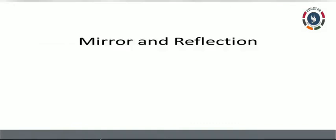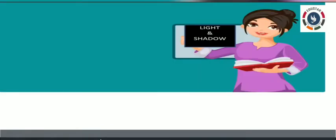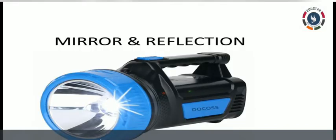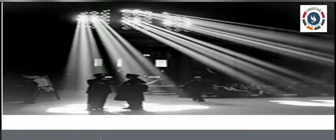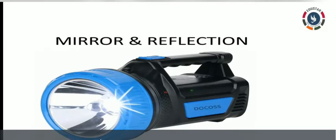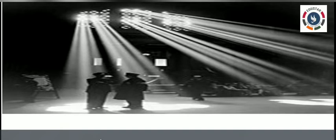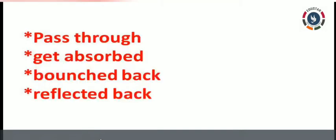Now we are going to learn about mirror and reflection. Light travels in a straight path. Take a torch, switch it on, and see — the light goes in a straight path and hits the wall; it is not bent anywhere. When the light falls on an object, it can pass through the object, get absorbed by the object, or get bounced back and reflected by the object.